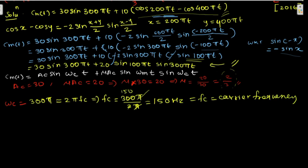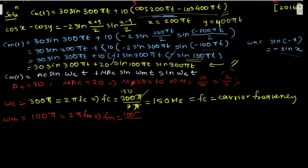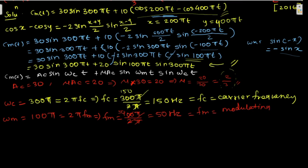For the modulating frequency, ωm = 100π, which equals 2πfm. So fm = 100π / (2π) = 50 Hz. The modulating frequency fm is 50 Hz.